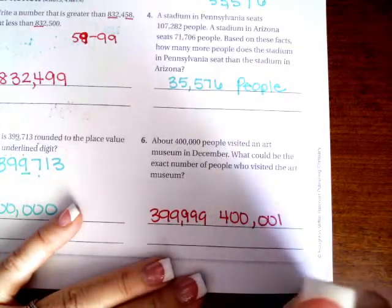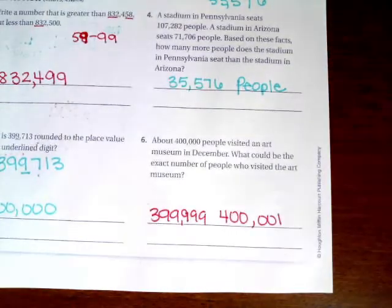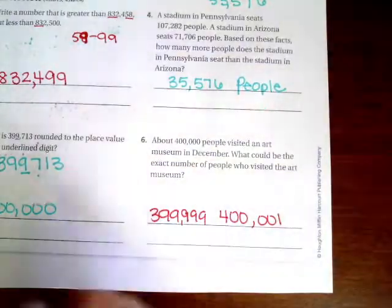So you choose any number that would round to 400,000. Can be one of these, it can be a different one you choose. All right guys, thanks for hanging out for chapter one. Come on back for chapter two. See you soon.